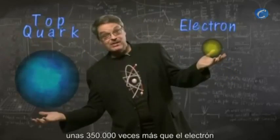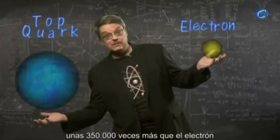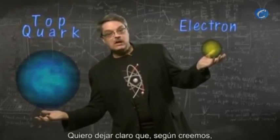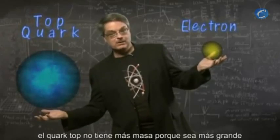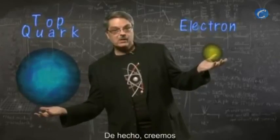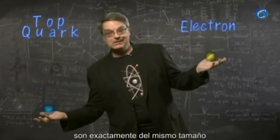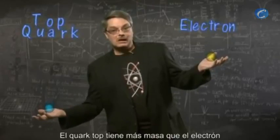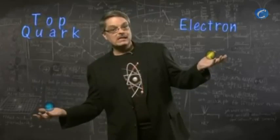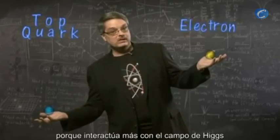I'd like to stress that we believe the top quark is not more massive because it's bigger. It's not. In fact, we believe that both the top quark and the electron are exactly the same size. Indeed they both have zero size. The top quark is more massive than the electron simply because it interacts more with the Higgs field.